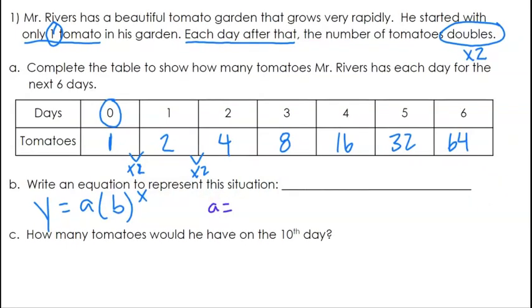Now remember, a is that starting value. So a is going to be the value here of tomatoes on day zero. So a is one, what we started with. And then b is that common ratio or that multiplier. What number are we multiplying by each time to get the next value? And that's going to be two. And then we just plug that into our equation.